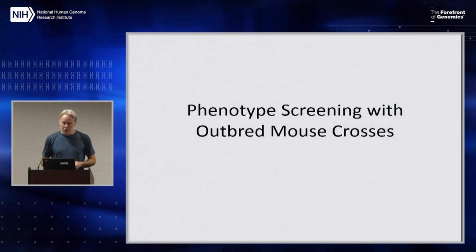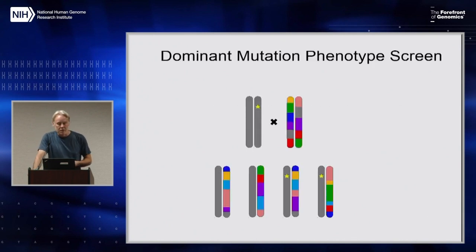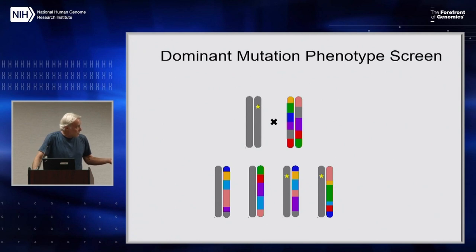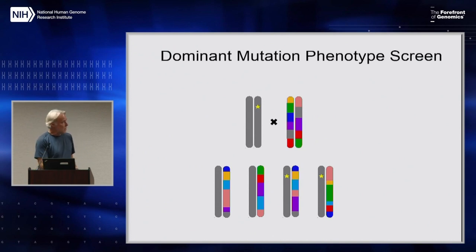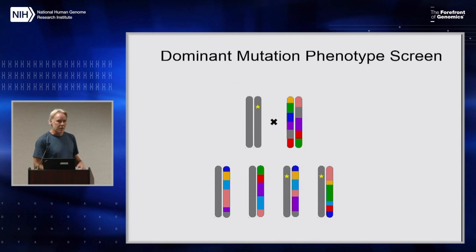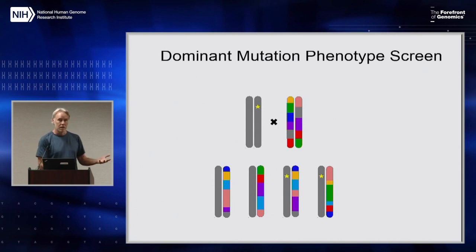So how can we use outbred mice to do phenotype screens? There are many ways you could come up with, and I just want to show you a couple — one very simple one. There's a dominant mutation phenotype screen. Let's imagine that we have a mutation — this yellow star here — and it's on a C57 Black 6N background. I have a heterozygous breeder, and I cross it to a DO mouse and get four offspring. And I cross it to another DO mouse and another — say 20, 30, or 50 of them — and I'm going to get a whole population of animals that are F1 hybrids, one half of their genome being B6 and the other half being diverse.